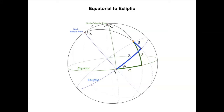let's draw the coordinates for a specific object. For the equatorial coordinates you have the vernal point, the right ascension along the equator, and the declination from the equator to the star. For the ecliptic coordinates you have the ecliptic longitude from the vernal point and the ecliptic latitude from the ecliptic to the star.